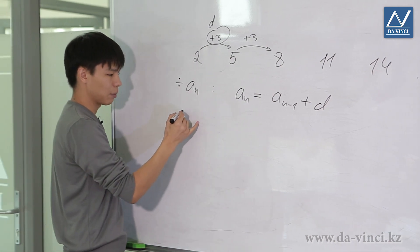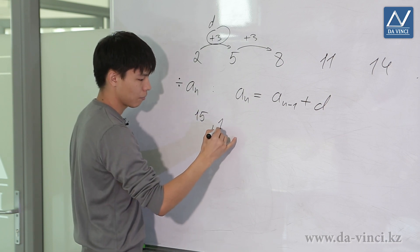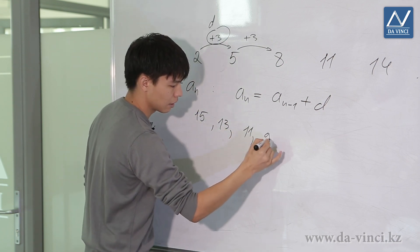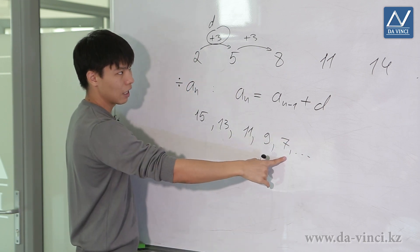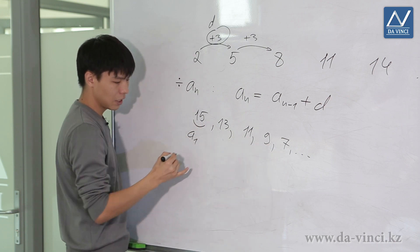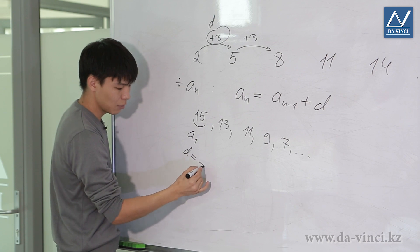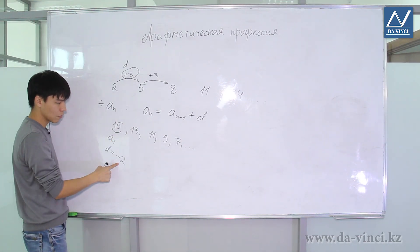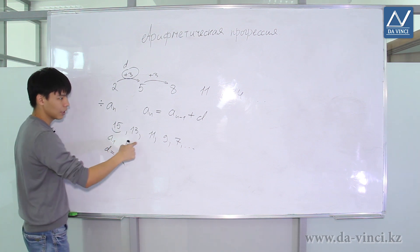Let's take a look at an example. The sequence 15, 13, 11, 9, 7, and so on is an arithmetic progression where 15 is the first term and the difference d is equal to minus 2. Indeed, we add minus 2 to get 13 from 15, minus 2 to get 11 from 13, and so on.